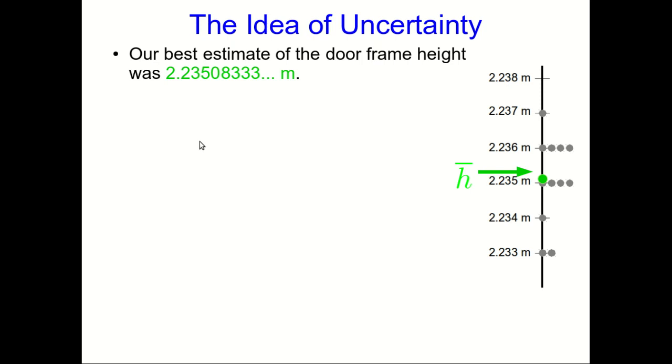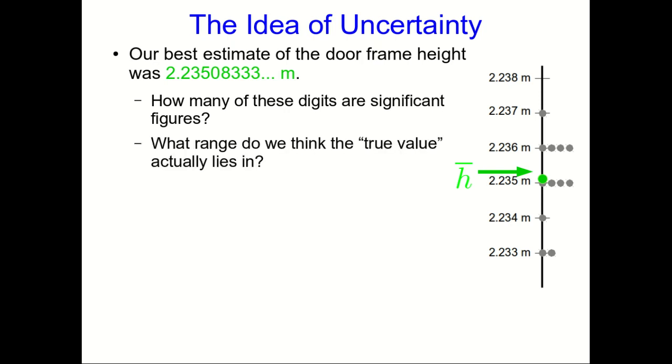I've added our best estimate, and I've called it H with a line over top, and we often indicate that something is a mean by putting a line over top of it. Don't confuse that with a vector symbol, which is an arrow. We have this best estimate, but I hope you don't believe that we think the door frame is exactly 2.23508333 meters. If we were to redo these measurements all again, we would presumably come up with a slightly different answer, and that tells us that there's uncertainty. So, how many of these digits are significant figures, and what is that uncertainty? What range do we think the true value actually lies in? We think it's close to this mean that we've calculated.